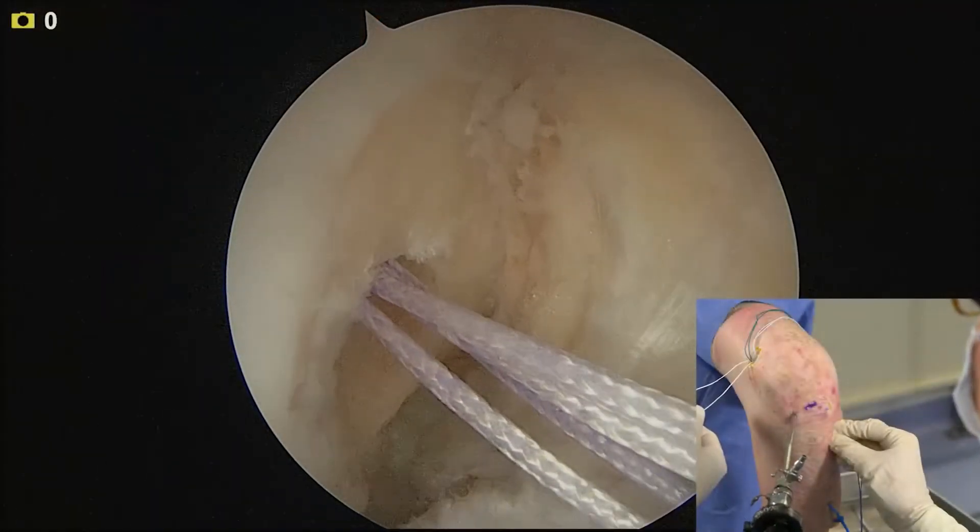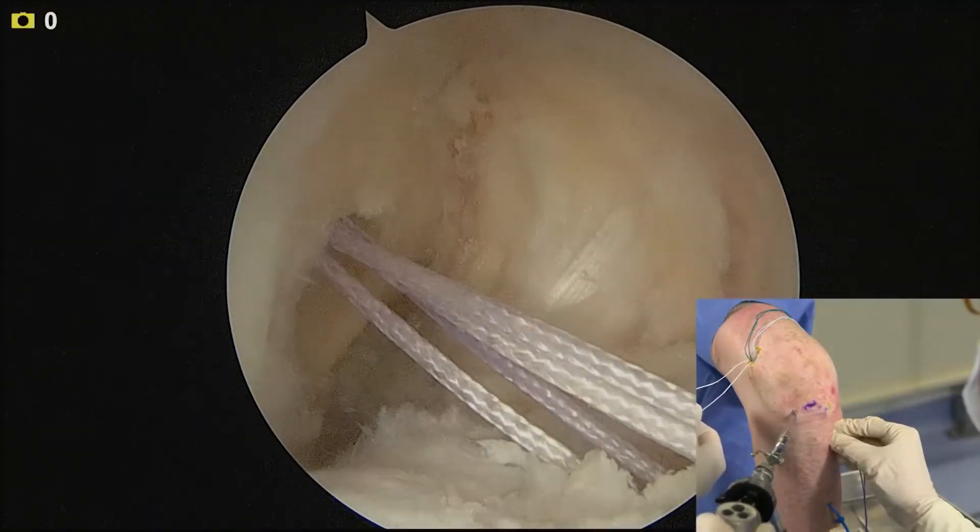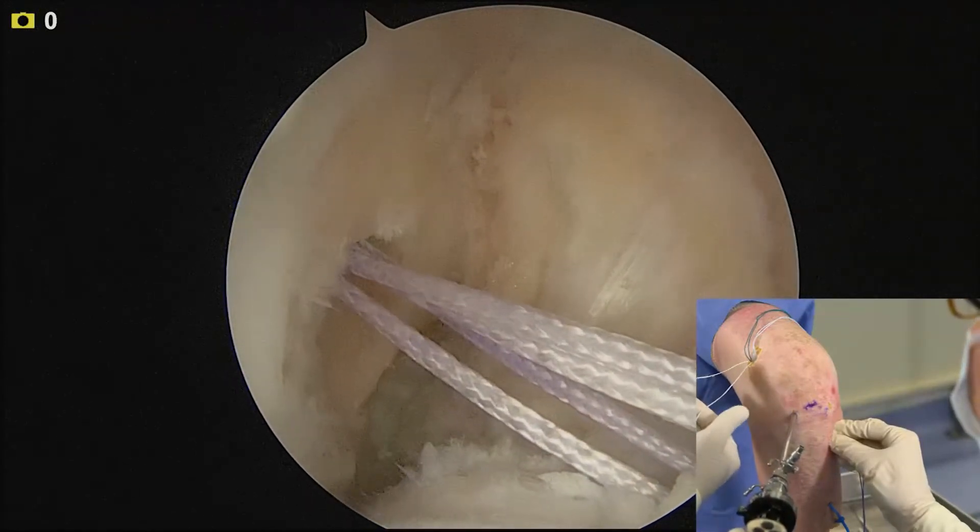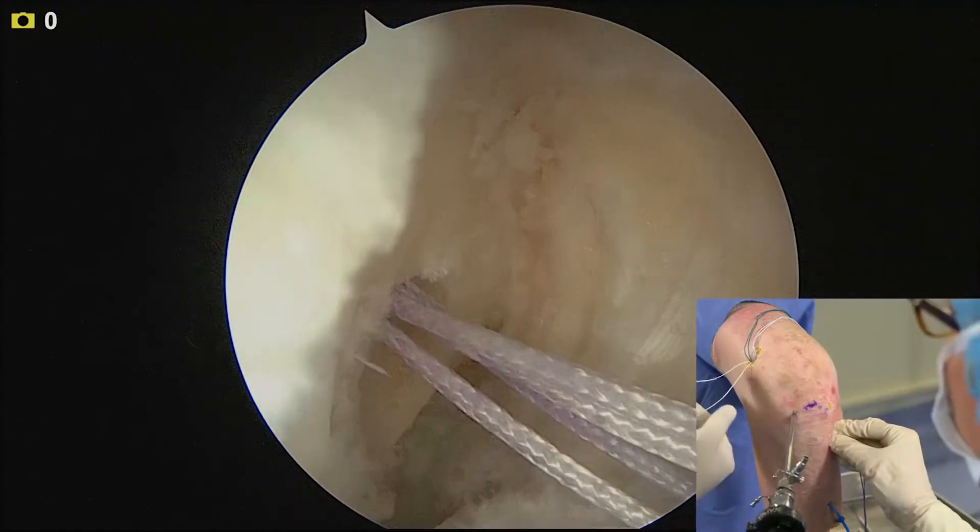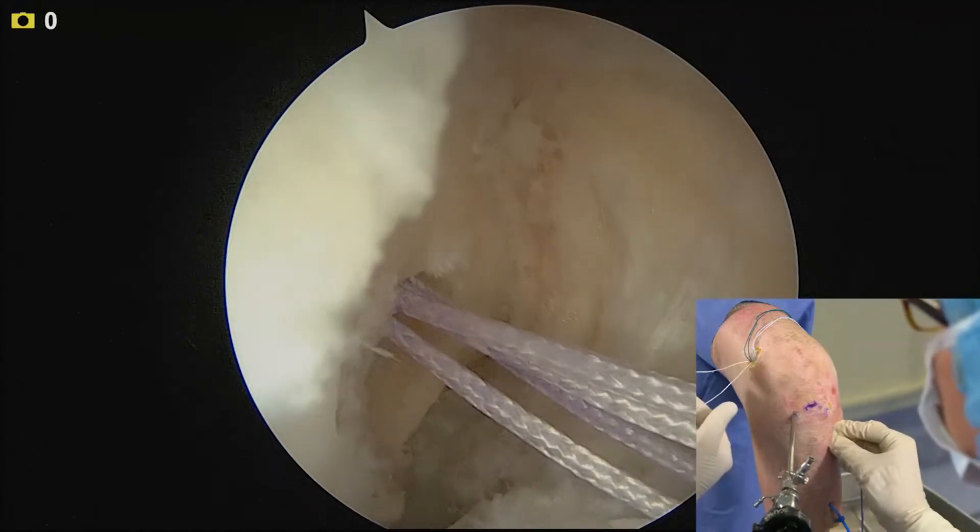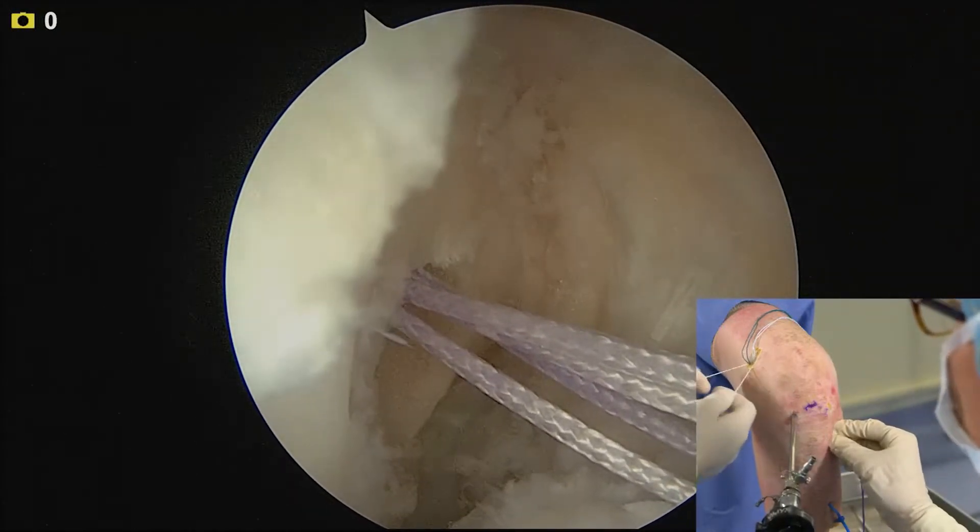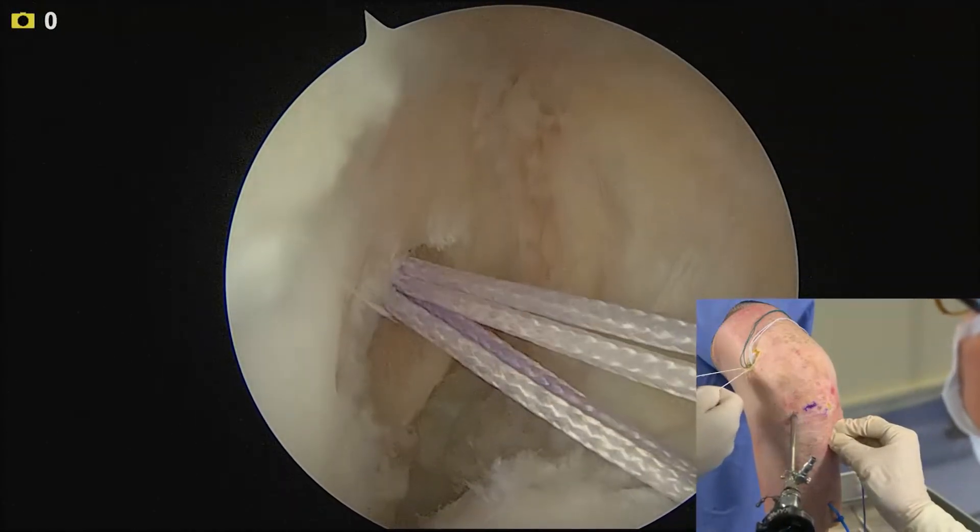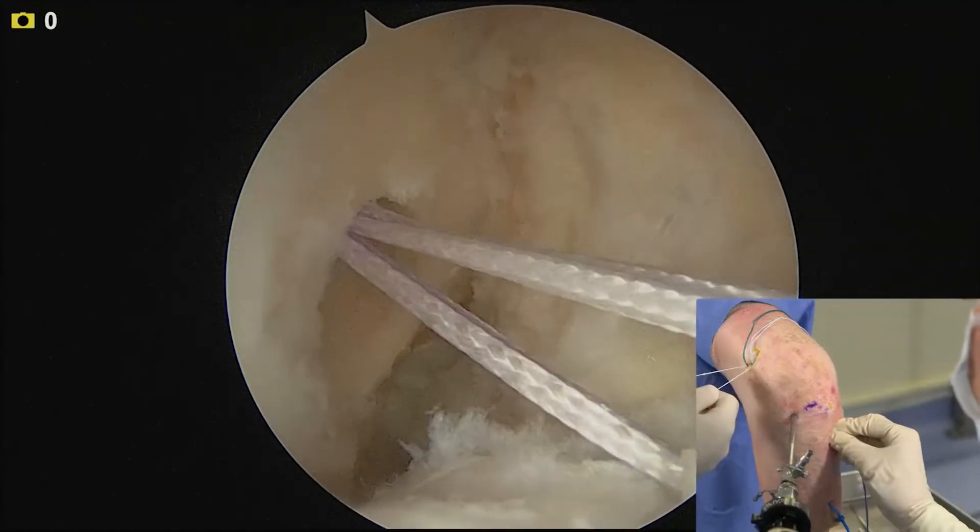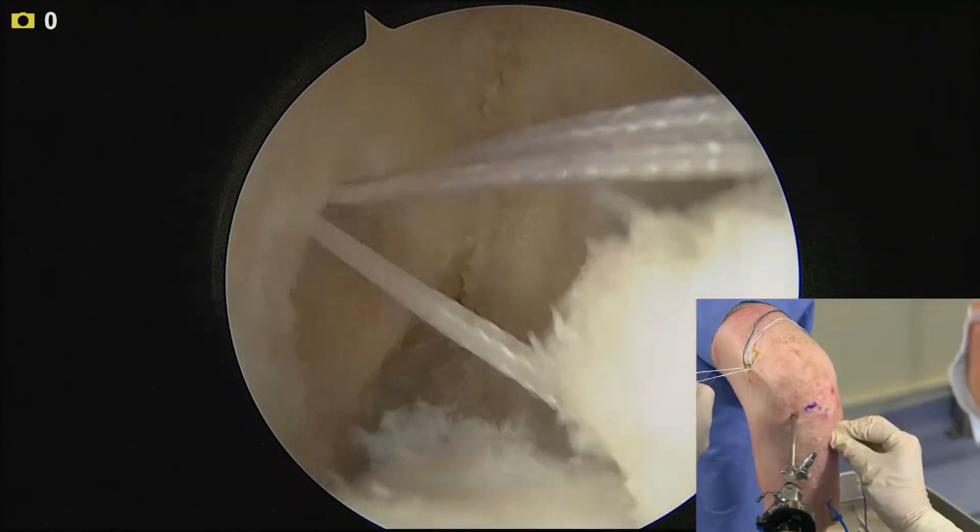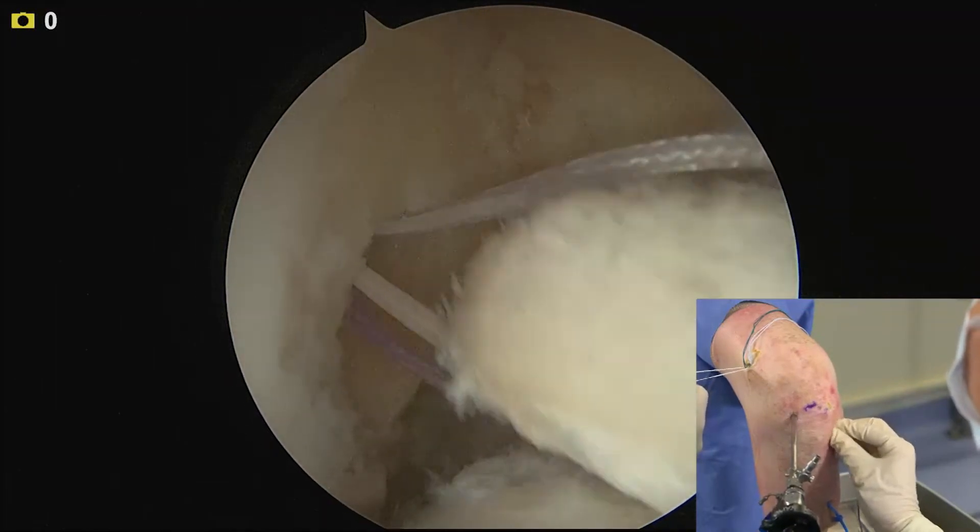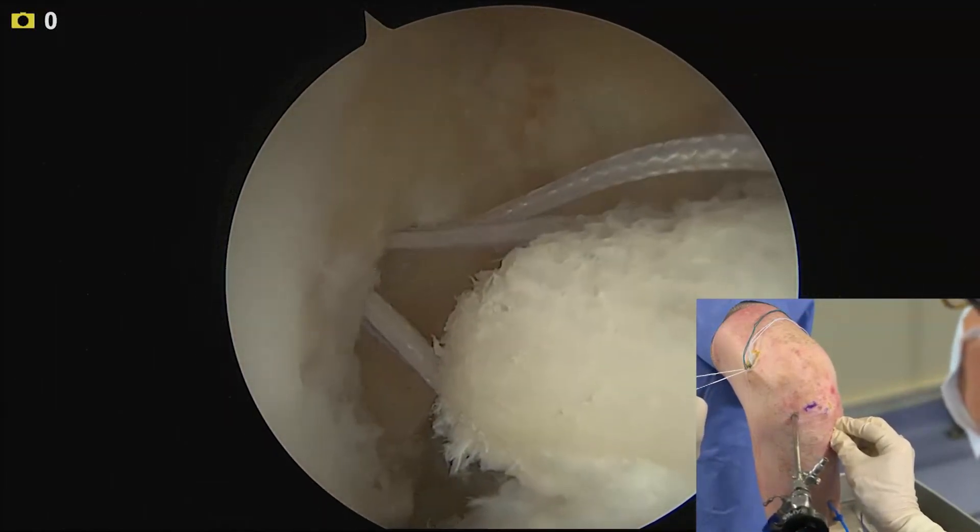The next part is to bring the bone plug into the femoral tunnel. This is done strategically where first we'll pull on the tensioning sutures. The tensioning sutures will be alternating the white sutures as we bring the bone plug through. This is done in a controlled fashion, and as the bone plug gets closer it's important to not have too much tension.